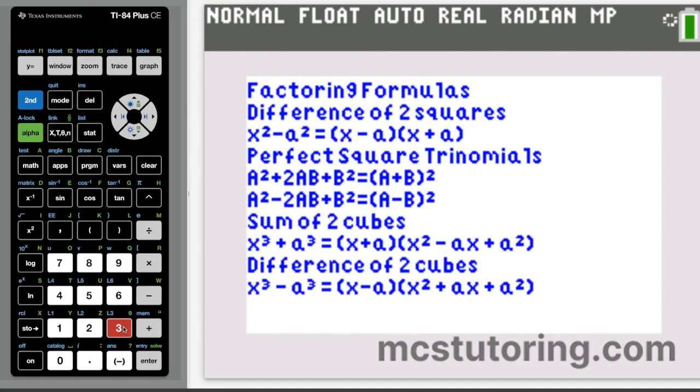And then we go on to factoring formulas. Now, one thing here, you'll see the difference of two squares, the x squared minus a squared. Example, that would be x squared minus 25, so that'd be x squared minus 5 squared would be x minus 5, x plus 5. Now, I changed the format for the perfect square trinomials. When you expand a plus b quantity squared, it's a squared plus 2ab plus b squared. Same thing for the a minus b quantity squared. And then I have the sum of two cubes and difference of two cubes. These equations are like streets. They go both ways.